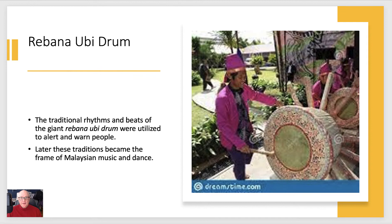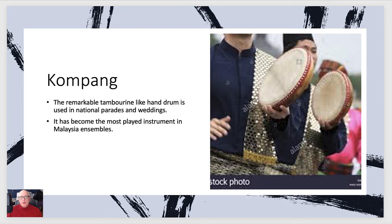We're going to look at two instruments. One is the Rebana Ubi drum, which is a ceremonial drum — a giant drum used in dance music especially, and it became the framework for Malaysian dance music. It has ancient origins, and when you hear it played it's just pretty amazing — like a very large bass drum in our culture. Then we have the Kompang, a remarkable tambourine-like hand drum used in national parades and weddings. It's become the most played instrument in Malaysian ensembles — like a tambourine but without rattles. We can trace this hand drum tradition all the way back through human migration to Africa.